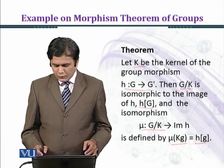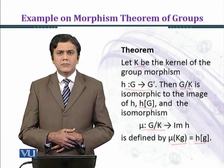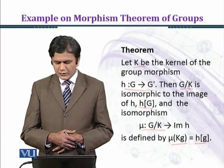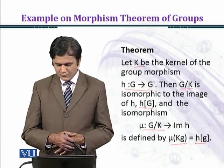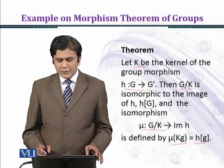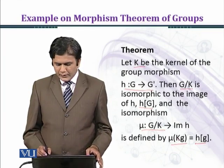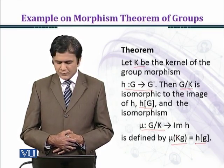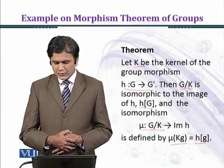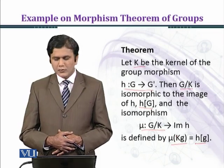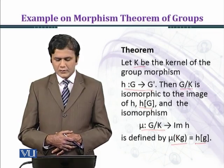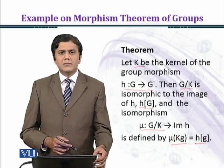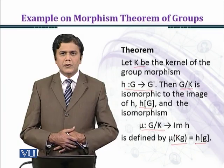Here we have denoted H(G) as the image of G under H. We can see that the coset Kg under mu will be mapped to H(g). This theorem has been proved in the previous modules.